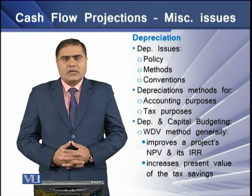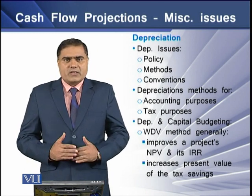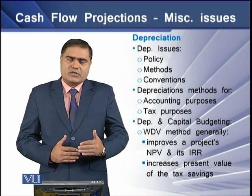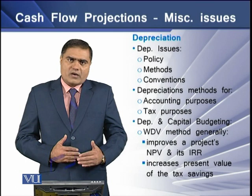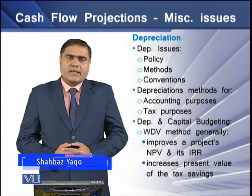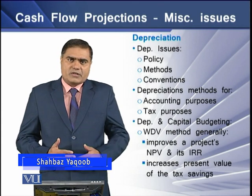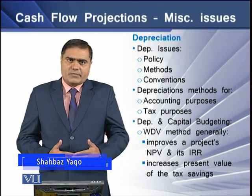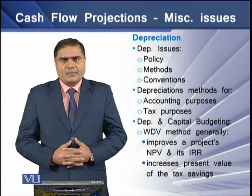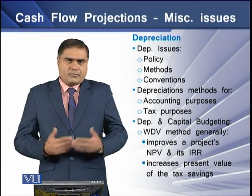First is the policy. This means whether an asset is to be depreciated in the year of purchase and not in the year of sale, or vice versa. The second is the method. By depreciation method, we mean straight line depreciation method, written down value depreciation method, sum of years depreciation method, unit of output, and many others.